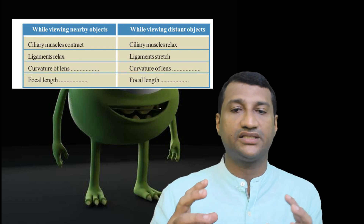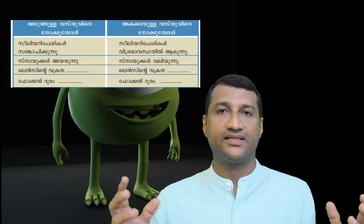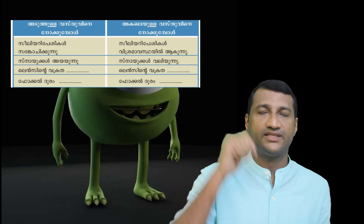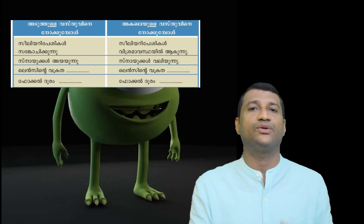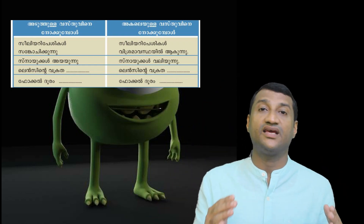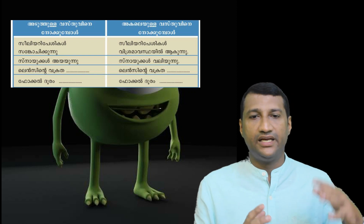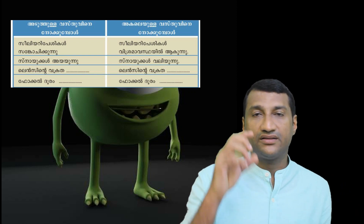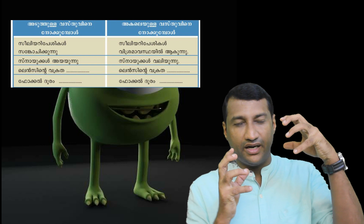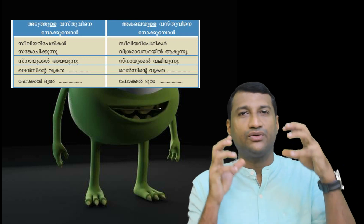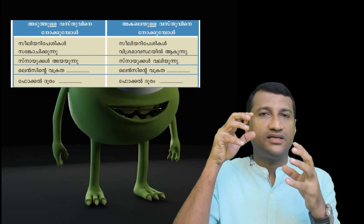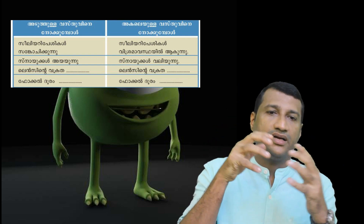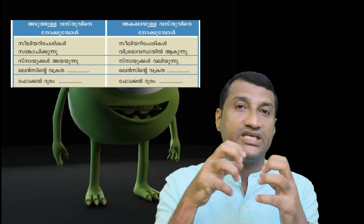Ciliary muscles relax for distant objects. The ciliary muscles are relaxed — you can relax. The visual muscles for the distant object are relaxed. The boundary muscles are sanghojic.